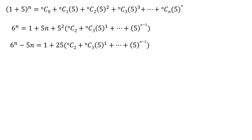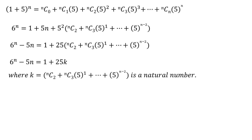We can write it as: 6 raised to the power n, minus 5 times n, equals 1, plus 25 times n choose 2, plus n choose 3 times 5, and so on, plus 5 raised to the power n minus 2. This simplifies to 6 raised to the power n minus 5n equals 1 plus 25 times k, where k equals n choose 2, plus n choose 3 times 5, and so on, plus 5 raised to the power n minus 2. Here k is a natural number.